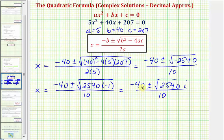Now remember, we're only asked to get the decimal approximation to three decimal places, so let's go ahead and write this in the form a plus or minus bi, and then we'll get our decimal approximations. So we have x equals -40 divided by 10, plus or minus the square root of 2540 divided by 10 times i. So notice how the real part simplifies nicely to -4.